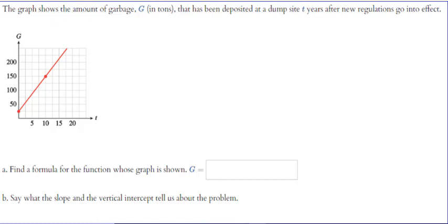Section 1.5 video part 2. In this example, the graph shows the amount of garbage in tons that's deposited at a dump site t years after a new regulation goes into effect. Find a formula for the function whose graph is g equals, g is the output, and then say what the slope and vertical intercept tell us about the problem.